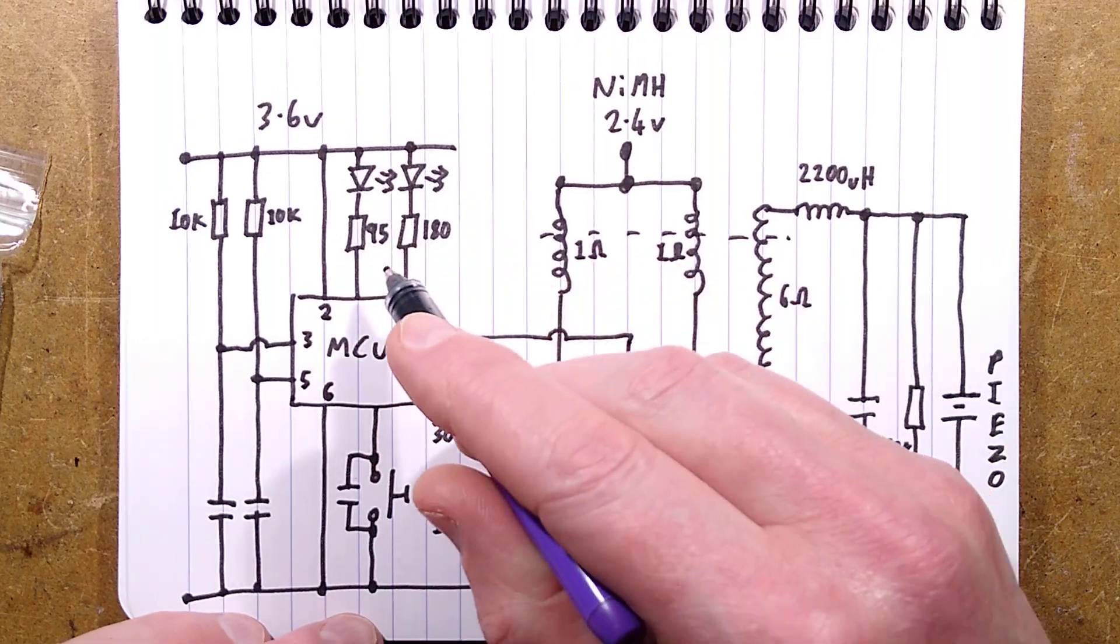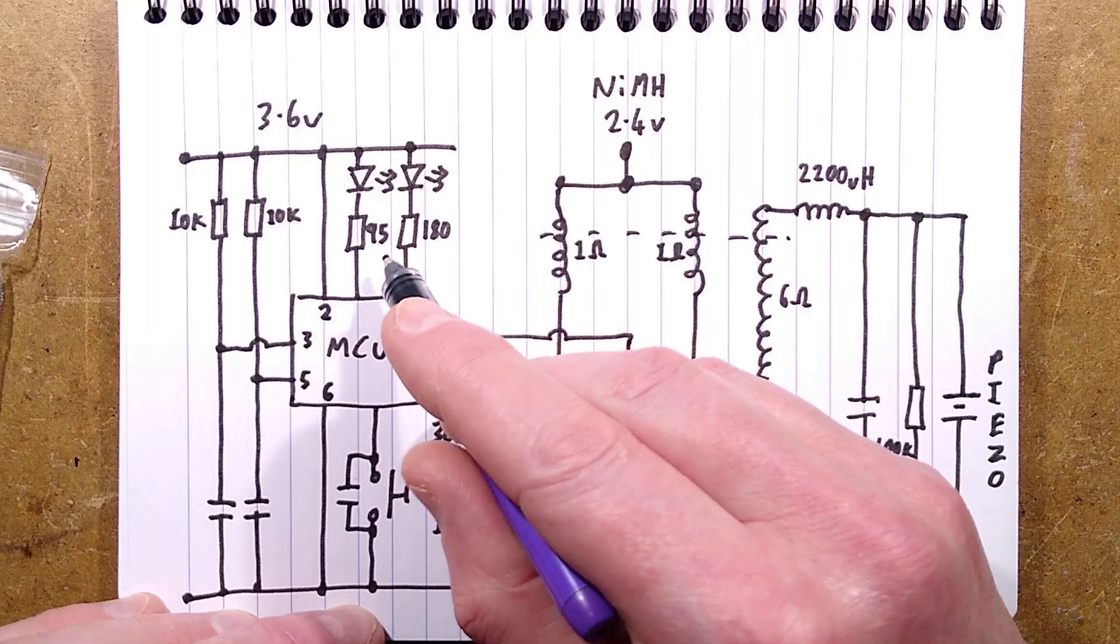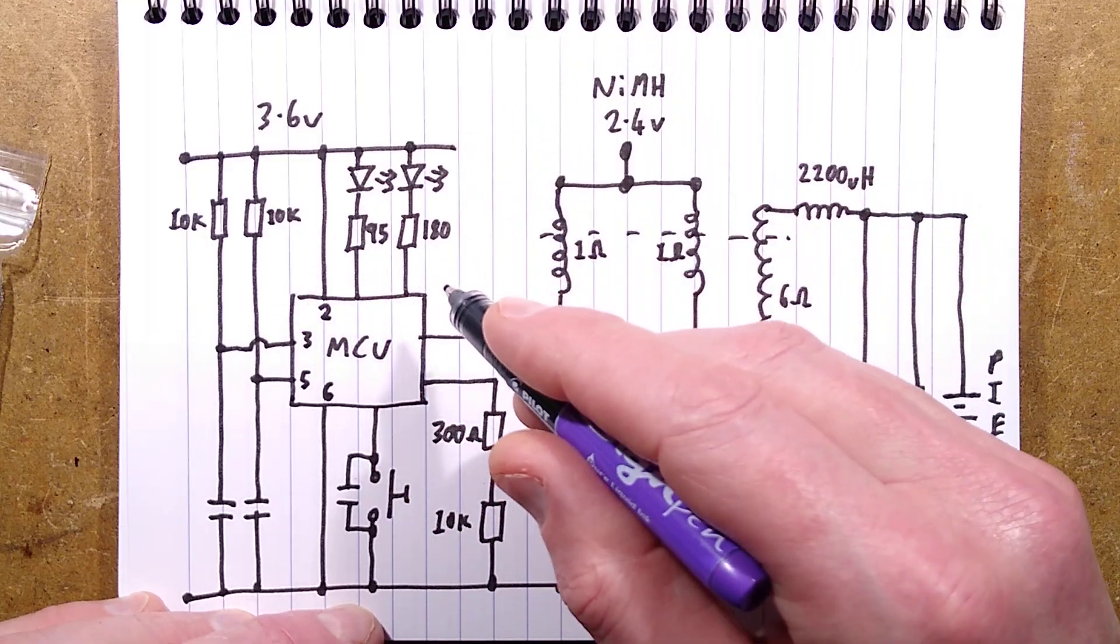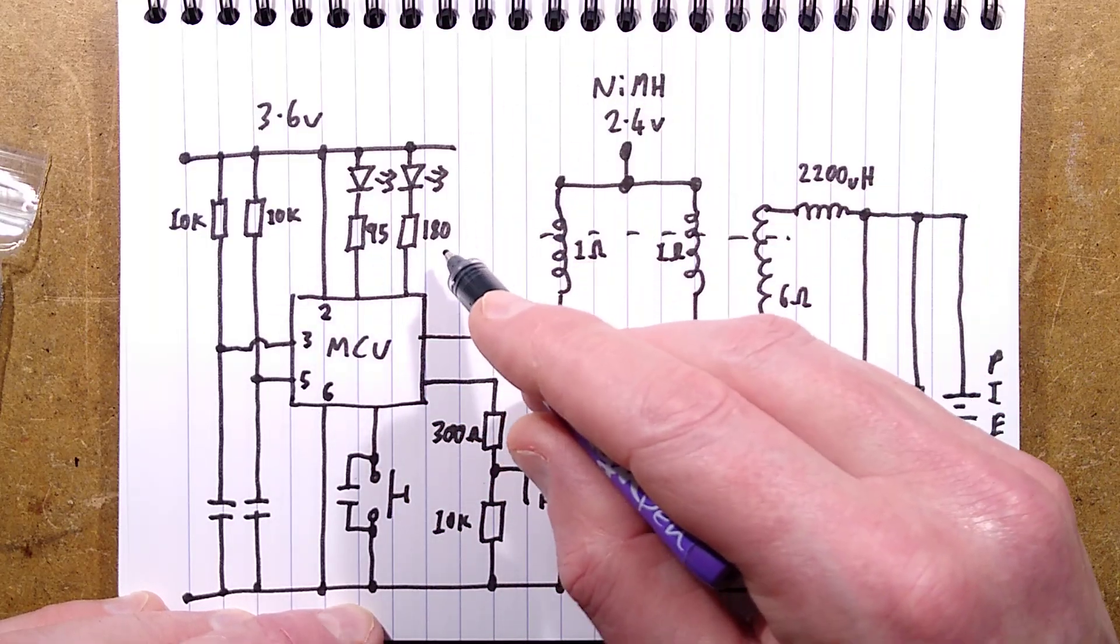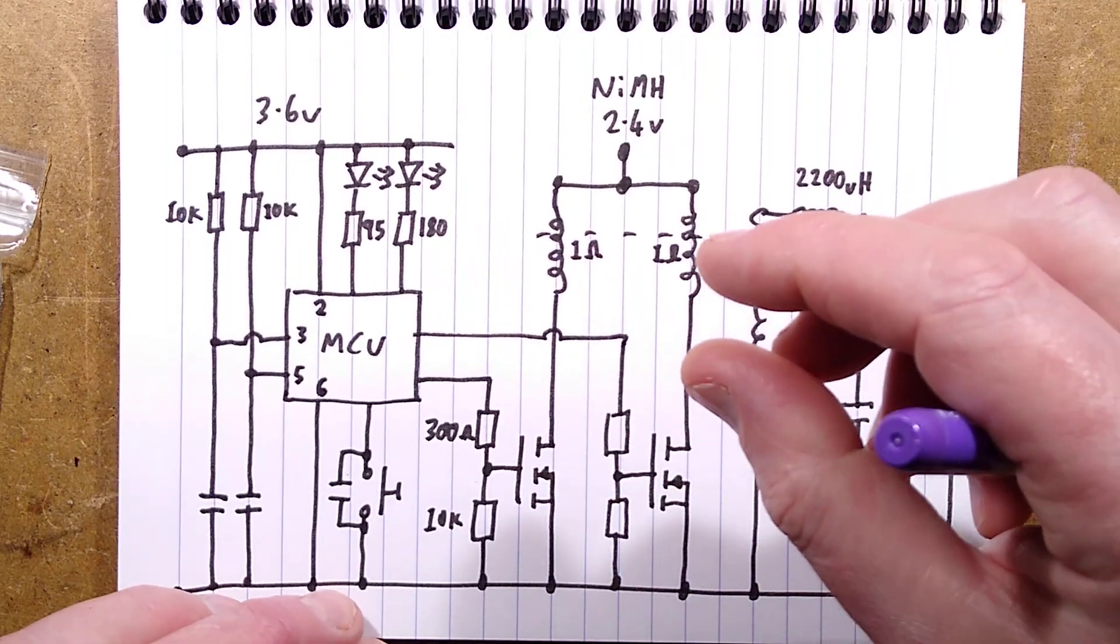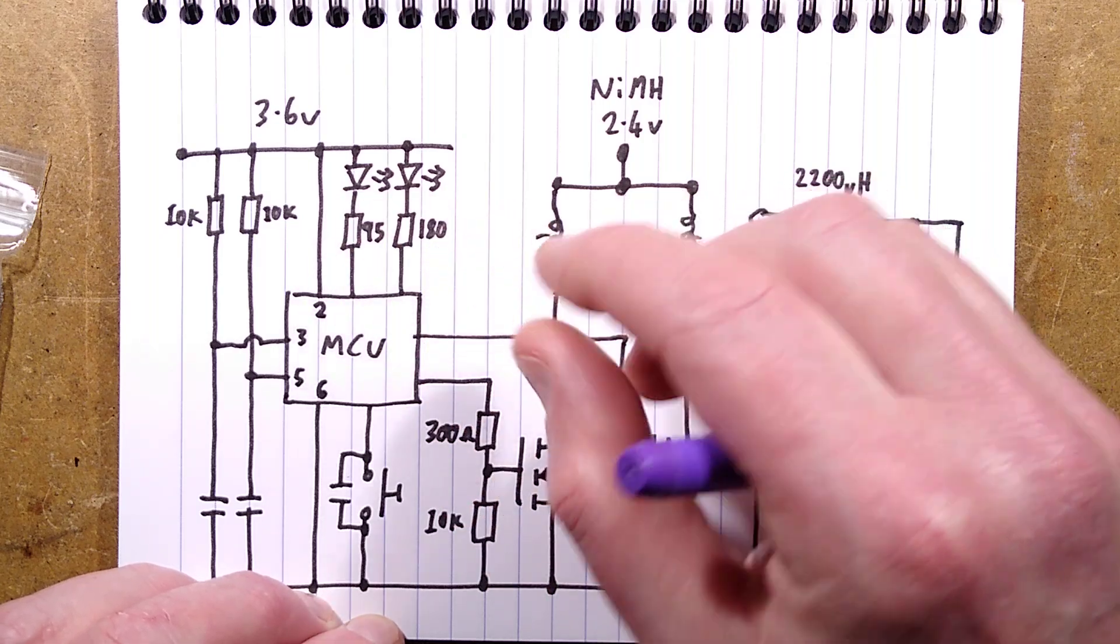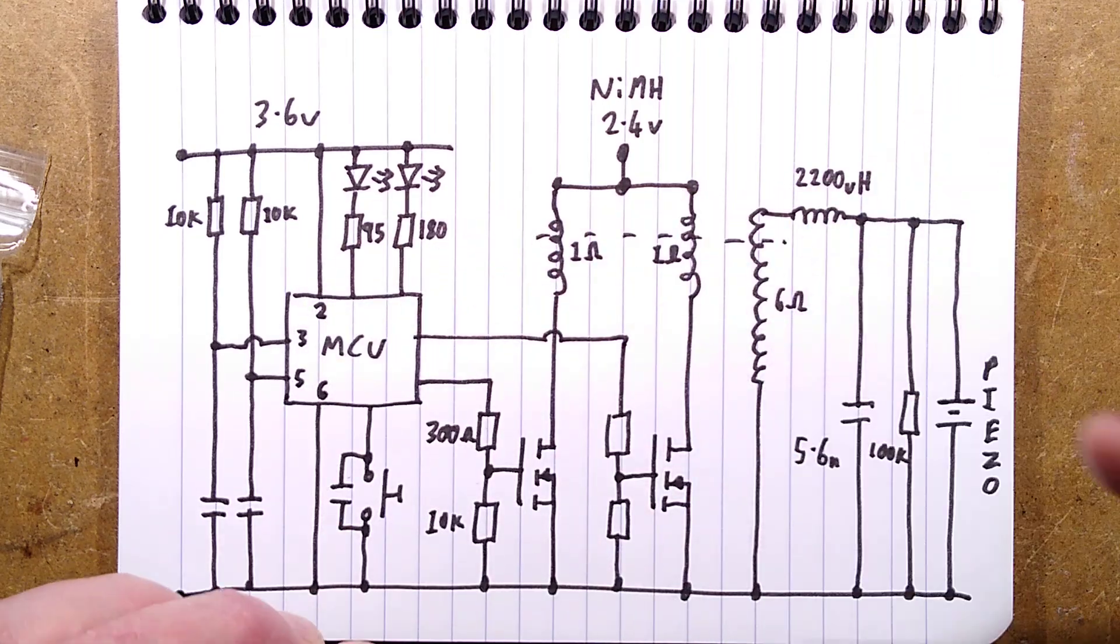The two LEDs, there's a 95 ohm resistor in one and a 180 ohm resistor in another. I'm going to guess that 95 is for the white LED, which has a higher voltage than the red LED, which probably is the 180. The white one has a much lower voltage drop, so it's a lower value resistor. That is a guess.